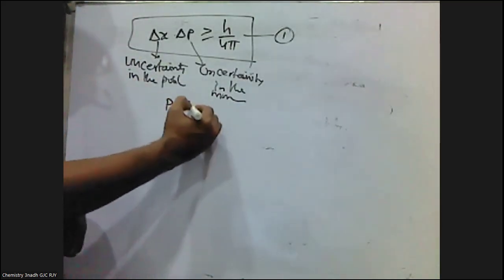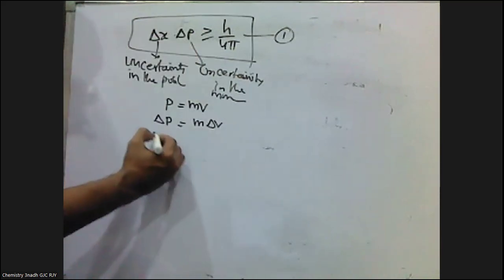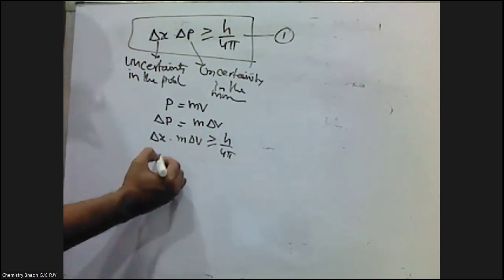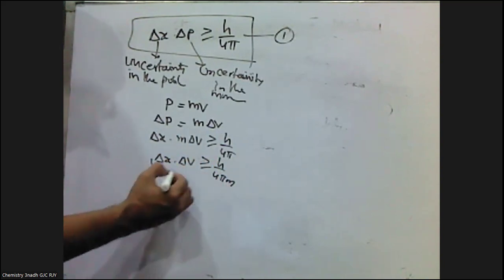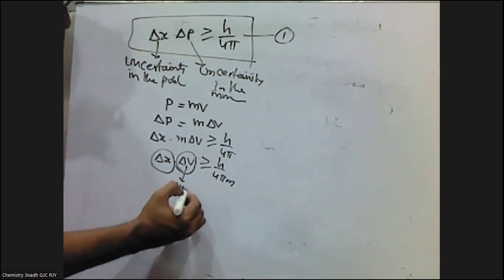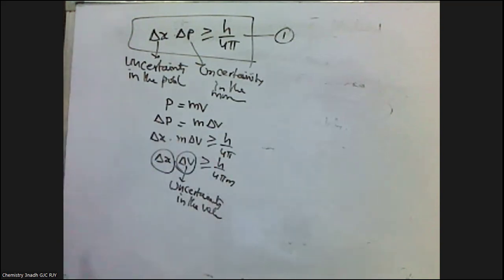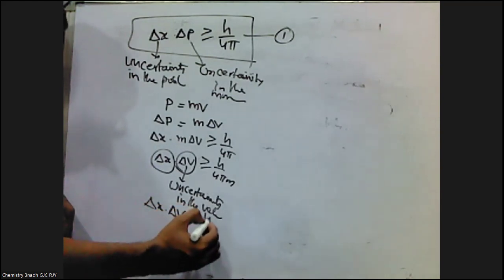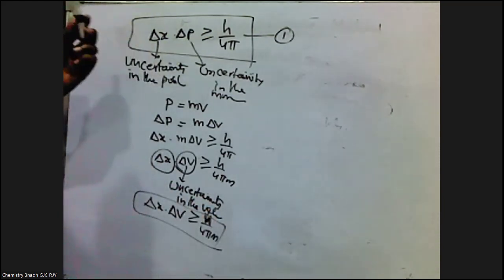We know that momentum equals mass times velocity, so delta p for a particle equals m times delta v. Substituting, we get: Δx · Δv ≥ h/4πm. This is another form of Heisenberg's uncertainty principle, where Δx is the uncertainty in position, Δv is the uncertainty in velocity, and m is the mass of the particle.